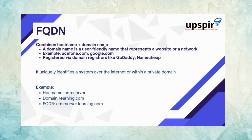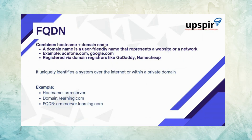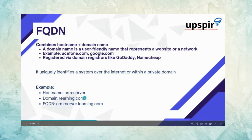On the internet, we map the FQDN to public IP addresses. When you procure a server to host a website, first you procure a domain name, then a public IP — for example from hosting providers like Hostinger. Then you go to the DNS management tool of your DNS provider and map your FQDN to your IP address. A typical example: hostname 'crm-server', domain 'learning.com', so 'crm-server.learning.com' becomes the FQDN mapped to an IP address.